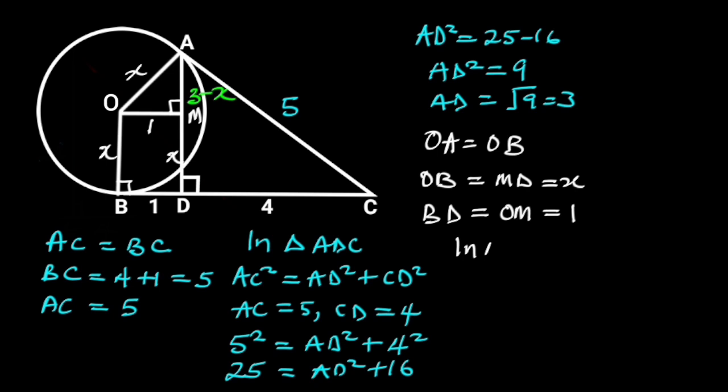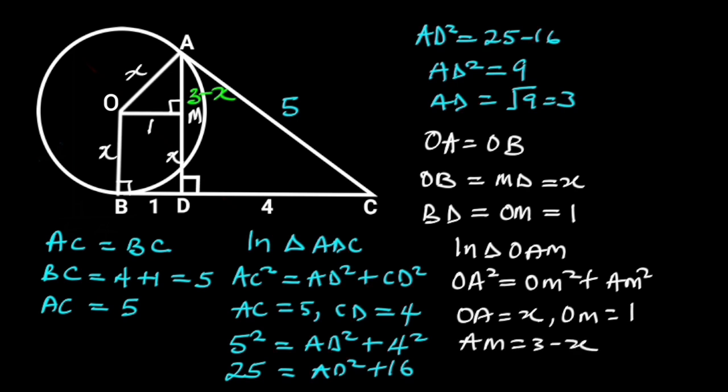Next, let's apply Pythagoras theorem in triangle OAM. From Pythagoras theorem, OA squared is equal to OM squared plus AM squared. But OA is equal to X, OM is equal to 1, and AM is equal to 3 minus X. If we substitute these values in the equation above, we will have X squared is equal to 1 squared plus 3 minus X squared.